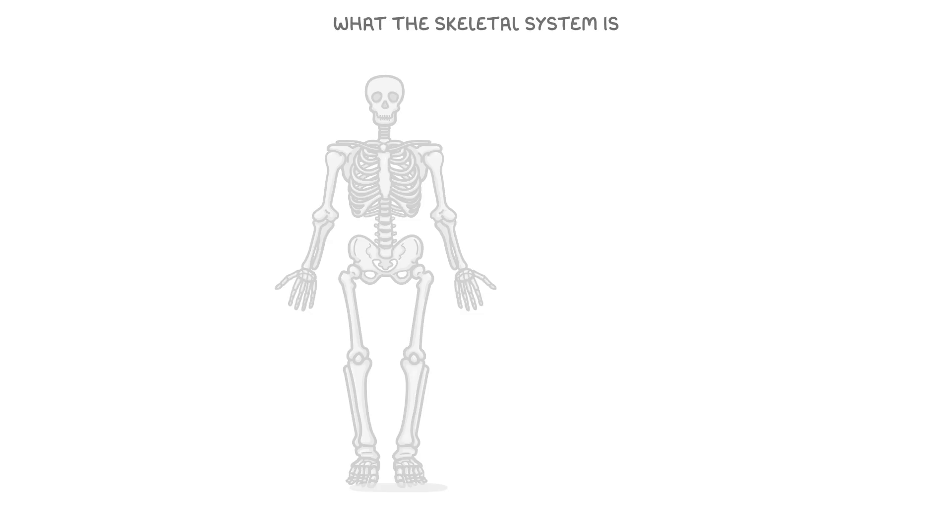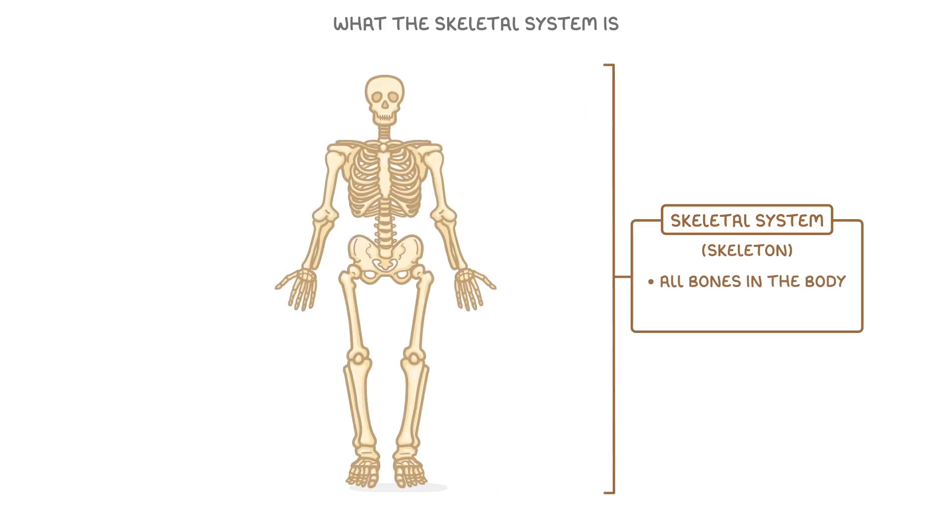Let's start by looking at what the skeletal system is. The skeletal system, which is the same thing as the skeleton, refers to all the bones in the body. In the human body there are 206 bones in total.